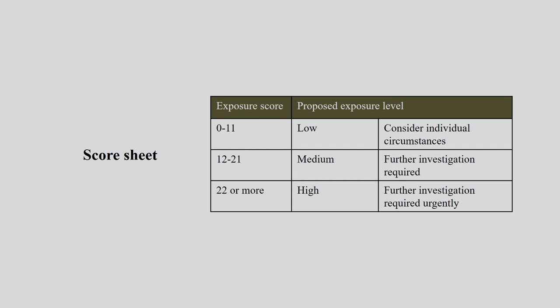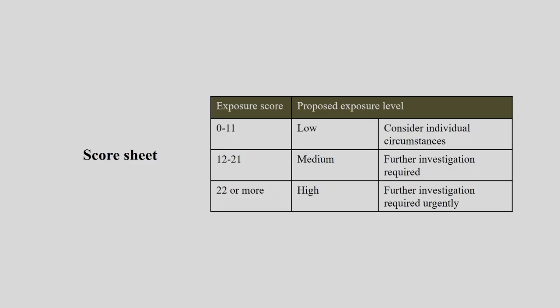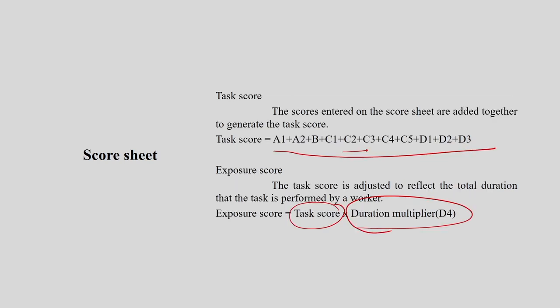The exposure score is interpreted as follows: 0 to 11 is low exposure — consider individual circumstances, as some values may be slightly elevated at the individual level. 12 to 21 is medium — further investigation is required. 22 or more is high — investigation should start immediately. That is how we interpret the ART tool results.